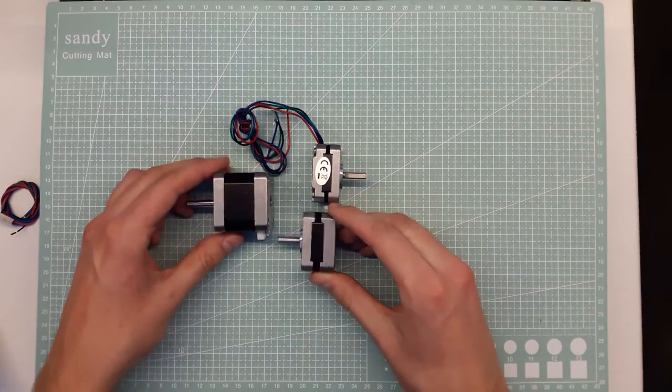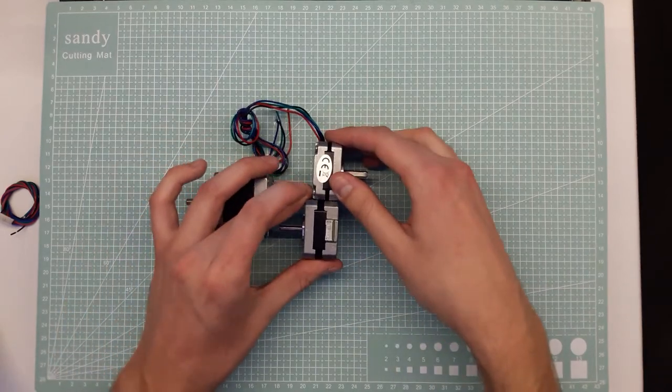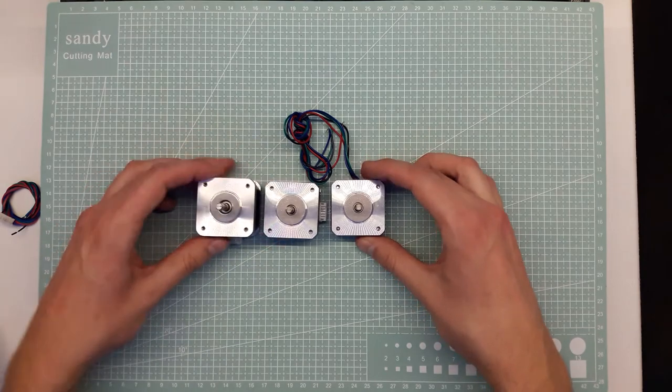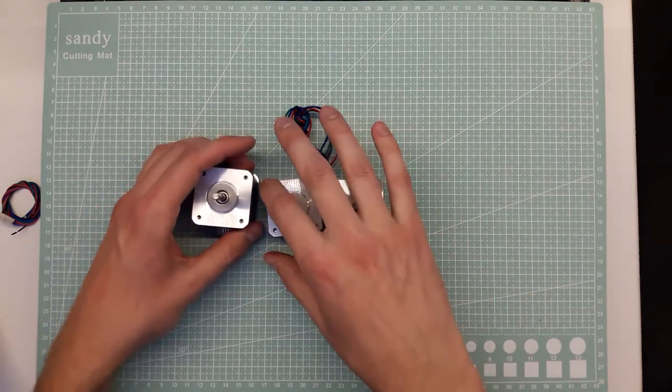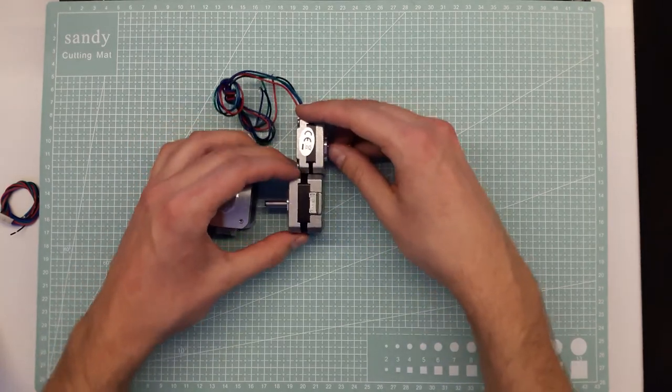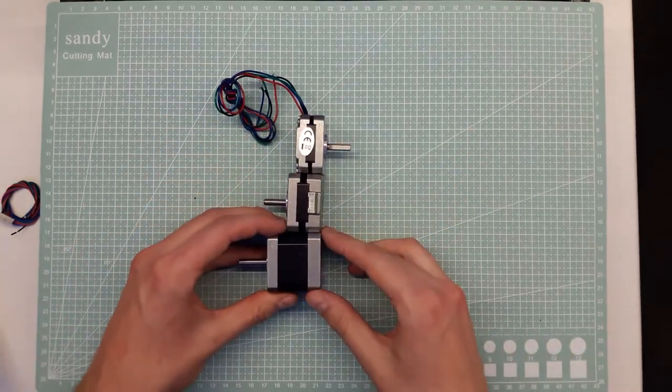This one is a bit stronger that's why it's a bit bigger. The outside dimensions are the same for all three of them, 42 by 42 millimeters, but as you can see the depth is quite different.